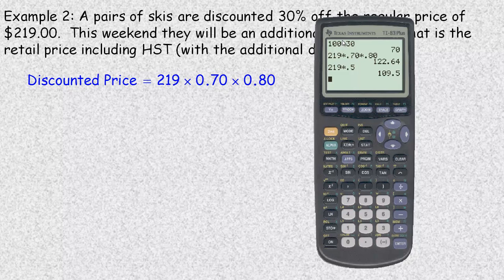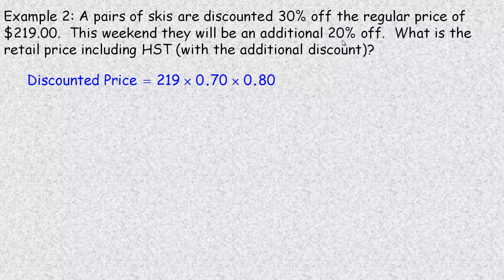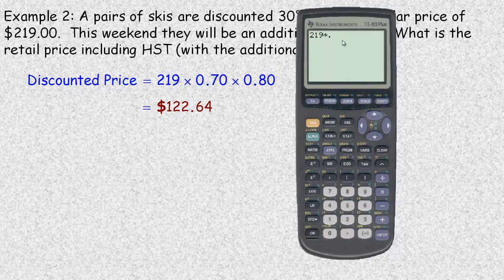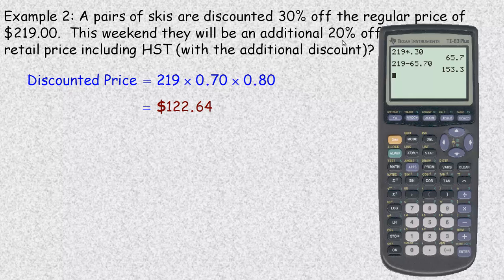Some people would like to do it this way: 219 times 0.30 for the first discount takes $65.70 off. So 219 minus $65.70, the new price is $153.30. Now we want to take an additional 20% off. This is a little longer way to do it, but this is what some people like to do.